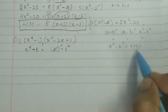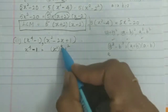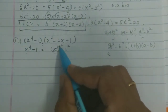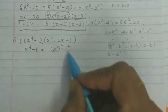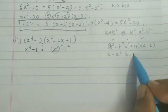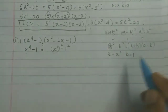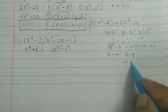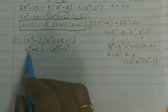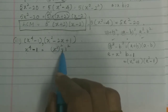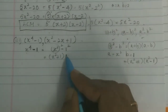Applying a² - b² = (a+b)(a-b), where a = x² and b = 1, we get (x²+1)(x²-1). Now x²-1 can again be factored using the same formula, giving (x+1)(x-1). So x⁴ - 1 = (x²+1)(x+1)(x-1).